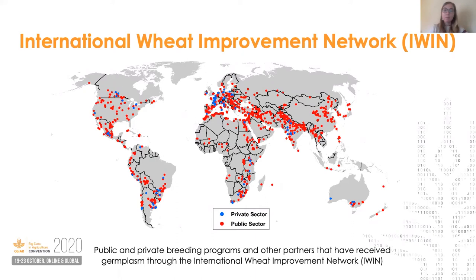One of the main benefits to CIMIT is that the partners are requested to return the testing data back to CIMIT. So over the past four decades in which CIMIT has coordinated the IWIN, they've been able to amass millions of data points on yield and other agronomic traits from nurseries at locations in over 90 countries. This is a really remarkable data set — probably one of the most extensive multi-environment trials of any crop in the public sector, opening up many opportunities to leverage the data to answer relevant research questions.